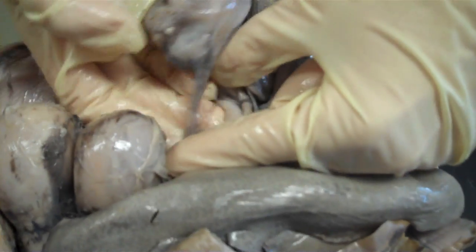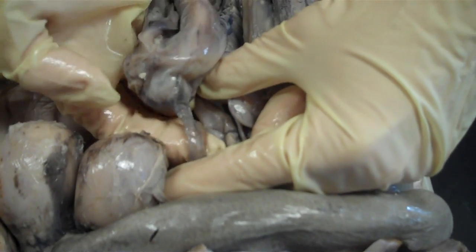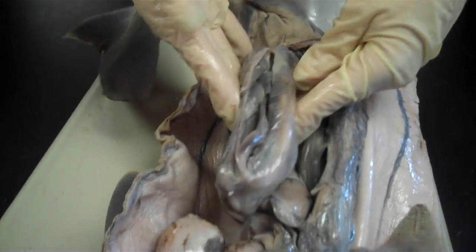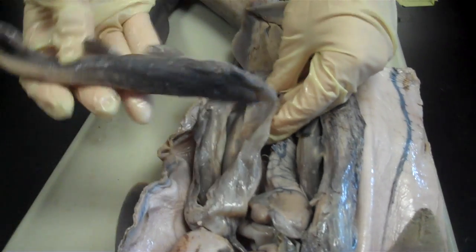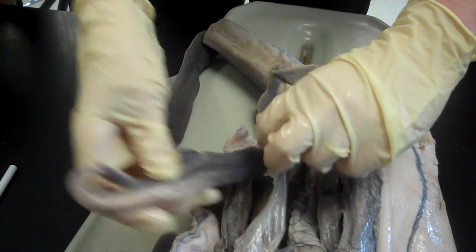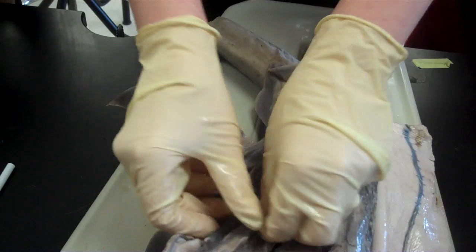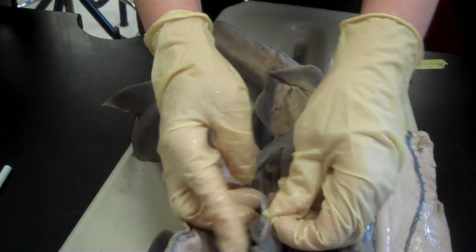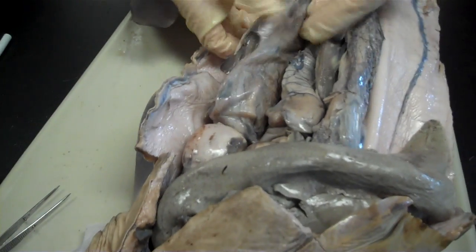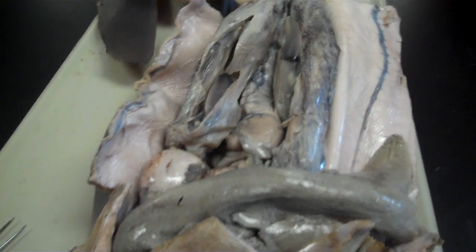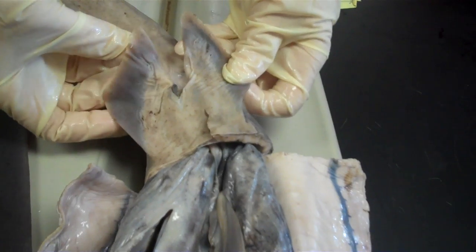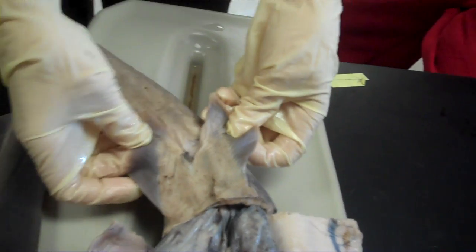The ovaries lead to this tube structure here. That's the oviduct. Oviduct leads to the uterus, and this is a pregnant uterus. And you can see the babies inside. So the babies, when they're ready to be born, would come out of the cloaca again. So you can see she does not have claspers. That indicates that she's a female.